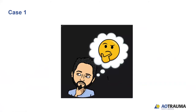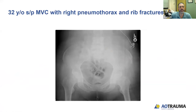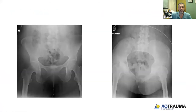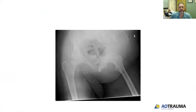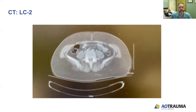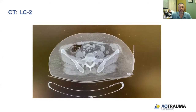We'll go through a couple of cases that I want you to think about while we're moving through the information. So this is a 32-year-old who's in a motor vehicle crash, had a right-sided pneumothorax and rib fractures. And these are her plain radiographs. Here's her CT, axial CT scan.